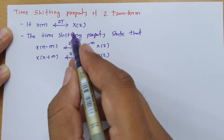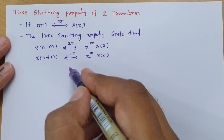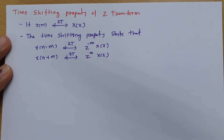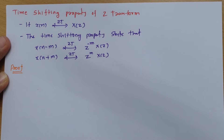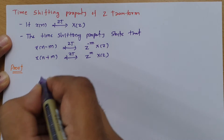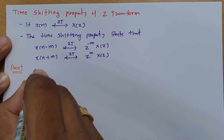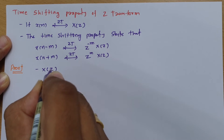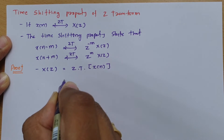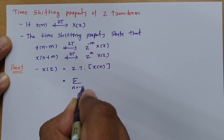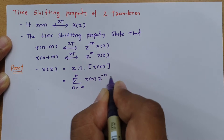So this is the time shifting property of z-transform. Now let us have proof of this property, so it will be more clear. I will derive the proof of this time shifting property. If I say I have signal x of z, that is the z-transform of x of n, then the basic formula for z-transform is: summation n varies from minus infinite to infinite, x of n into z to the power minus n.